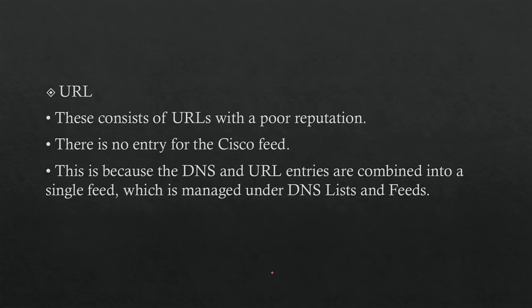The third type is URL Security Intelligence, which consists of URLs with a poor reputation. There is no separate Cisco feed entry for URL because the DNS and URL entries are combined into a single feed — they share the same database — managed under the DNS list and feeds.